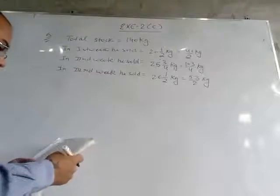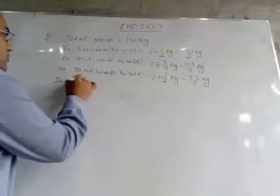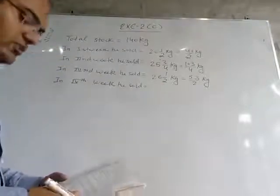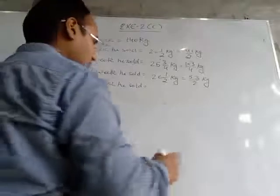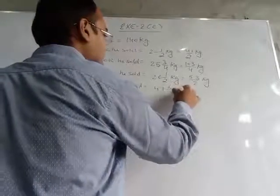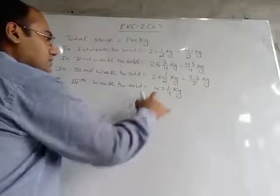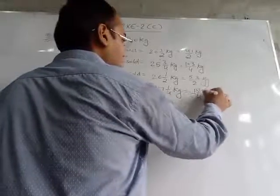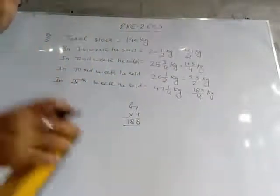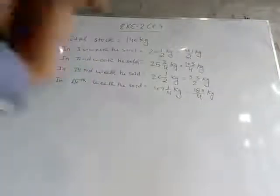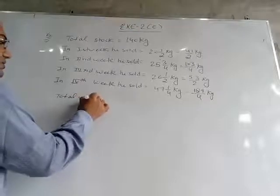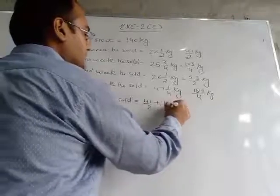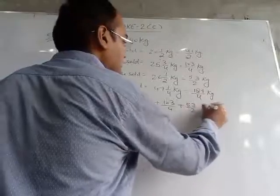In the fourth week he sold 47¼ kg. Converting: 47 multiplied by 4 is 188, plus 1 gives 189/4 kg. So total wheat sold equals 41/2 plus 103/4 plus 53/2 plus 189/4.